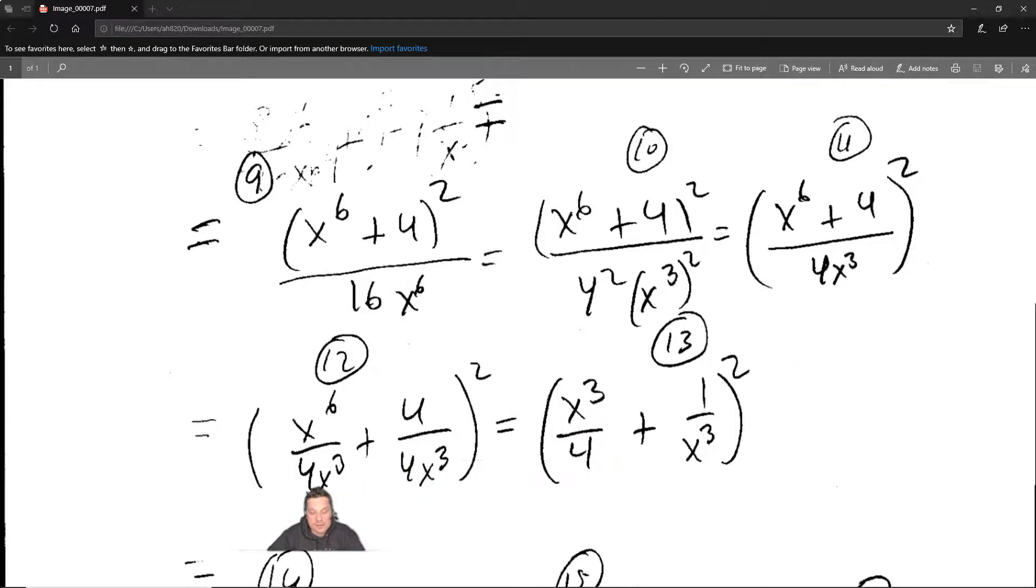At this point I can break this up because you see in the bottom I have only one term. So it's going to become x to the 6th over 4x cubed plus 4 over 4x cubed and the whole thing is raised to the 2nd. Then simplify. So for example, x to the 6th with x cubed will cancel. You'll have x cubed over 4. Then you'll have 4 divided by 4 which is 1. So you'll end up with 1 over x cubed and the whole thing is squared.